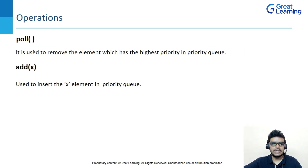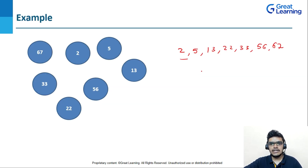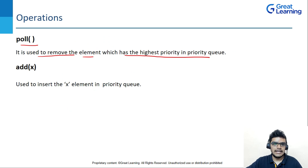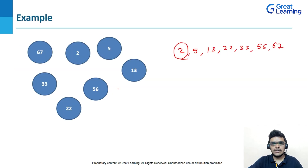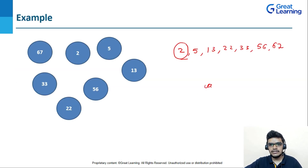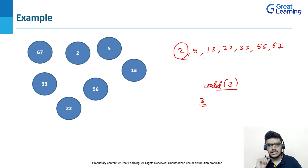There are two main operations. The first is poll, which is used to remove the element with the highest priority from the priority queue. In this example, 2 has the highest priority, so 2 will be removed first. The second operation is add, which is used to insert an element into the priority queue. For example, calling add(3) will insert 3 into the priority queue.